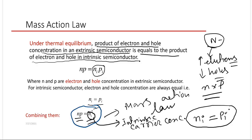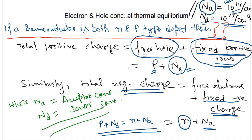Now consider a case where a semiconductor is both n-type and p-type doped. Suppose a semiconductor is doped with donor-type impurities at a concentration of 10^17, and at the same time doped with acceptor-type p-type impurities at a concentration of 10^40. Clearly Nd is greater than Na, so the semiconductor type will be n-type because the donor concentration exceeds the acceptor concentration. We are going to find the equilibrium electron and hole concentrations.